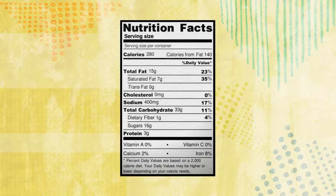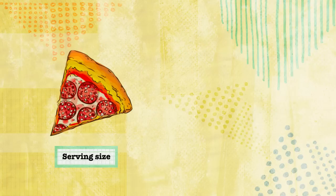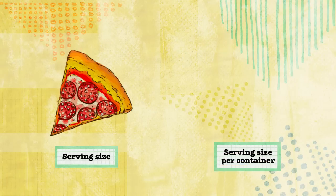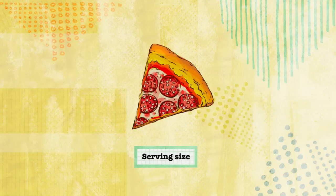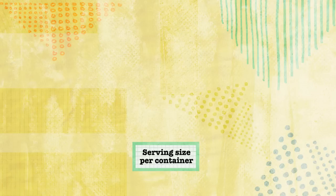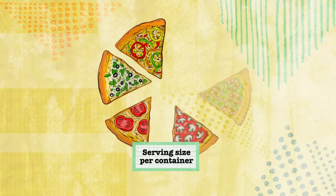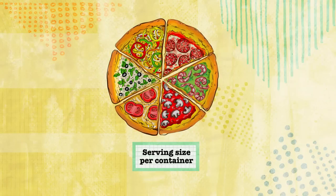The first thing you will find is the serving size and serving size per container. Think of serving size as a slice of pizza and serving size per container as the entire pizza. Serving size represents how much food is in one serving, a slice of pizza. Serving size per container tells us how many serving sizes there are in each container, the whole pizza.